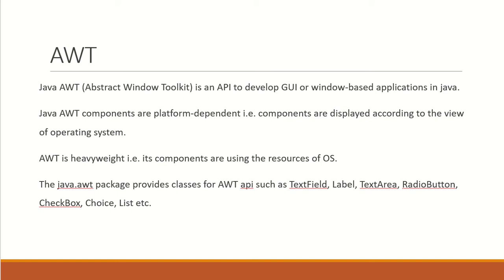So there are some features of AWT. First, unlike the platform-independent nature of Java, AWT is found to be platform dependent. That is, according to the hardware of the underlying system, you will have variations in the display. The second thing is that it is a heavy-weight package, which means it is supposed to use the resources of the operating system. All the components of AWT are supposed to use the resources of the operating system. That is why it is said to be platform dependent and heavy-weighted.